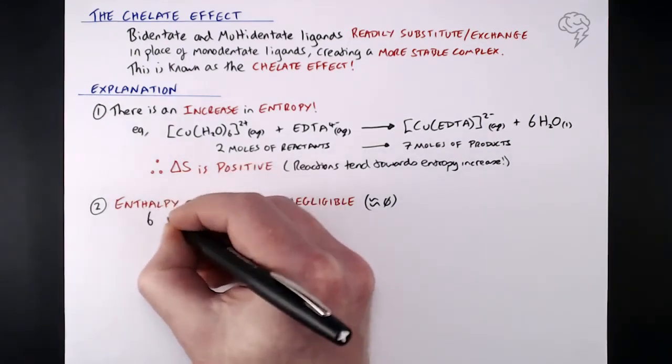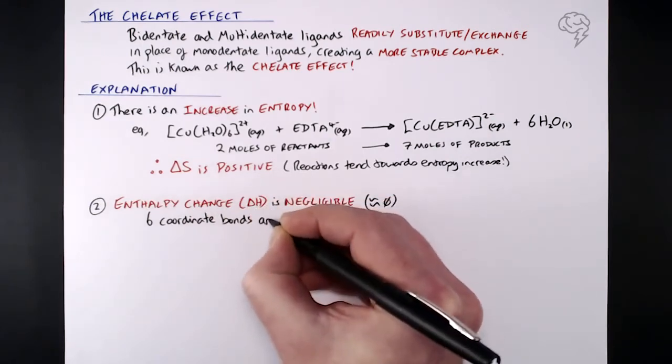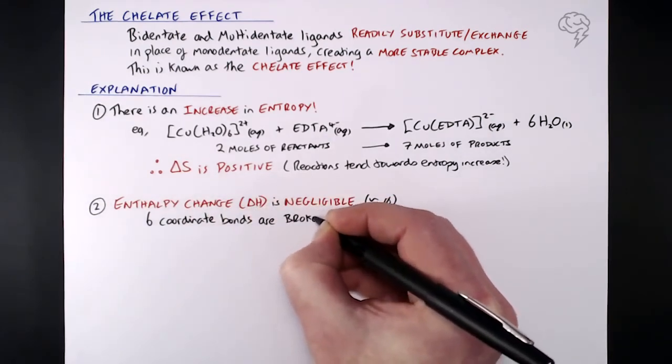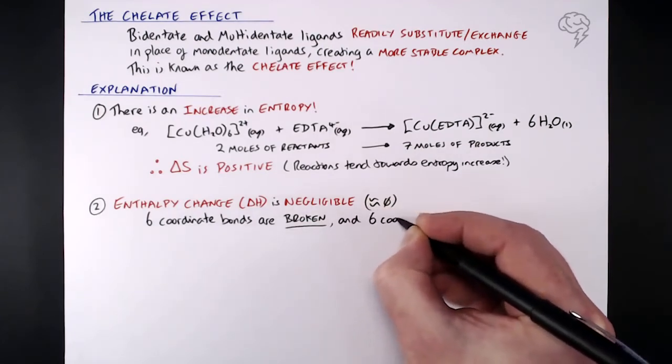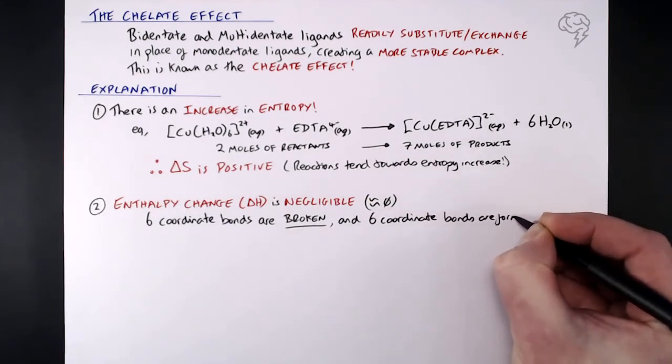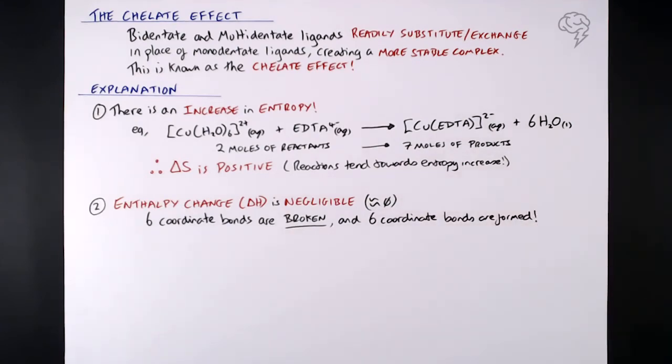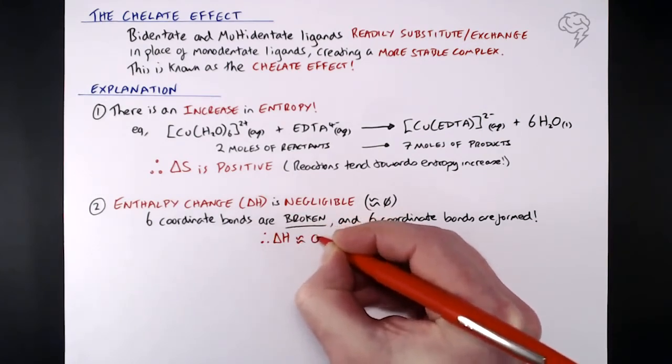What I mean here is that if we have six coordinate bonds, like we did around our copper at the top there with six water molecules, we need to break all of those coordinate bonds. Fine. We need to put energy in to do that. But then six coordinate bonds are forming from the EDTA. So on balance, we need to put energy in to break those six coordinate bonds, but then energy is released when six new ones are formed anyway. So really, on the whole, the enthalpy change, it's basically zero. So therefore, delta H is approximately zero.